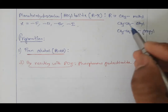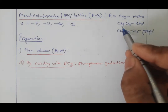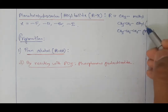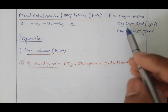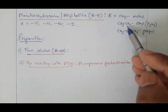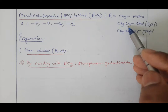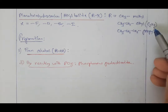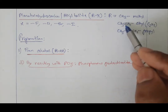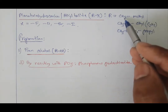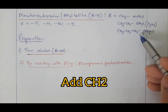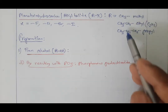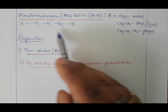Ethyl can be written as CH3CH2 or as C2H5 — the total carbons are 2 and hydrogens are 5. So methyl means CH3; add CH2 and it becomes ethyl; add another CH2 and it becomes propyl. This is your alkyl group and this is your halide.